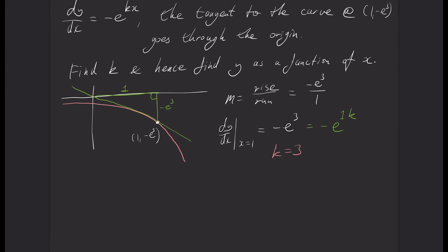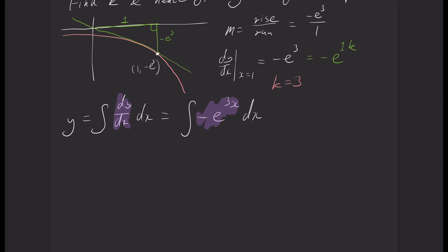So now I can start doing my calculus. So y is the integral of dy/dx dx, which means it is the integral of negative e to the 3x dx. And that's because dy/dx is negative e to the 3x from the question. So I can anti-differentiate that. I get negative 1/3 e to the 3x plus c.